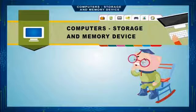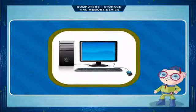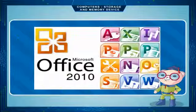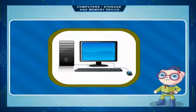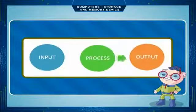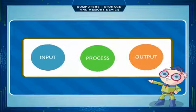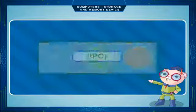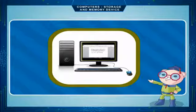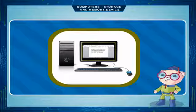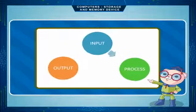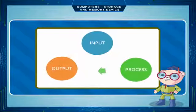A computer is an electronic device that processes raw data with the help of a program and produces meaningful information. These functions are performed in a cycle called the input-process-output cycle, or IPO cycle. We input data and instructions into the computer, it processes them according to our instructions and produces meaningful output. This output can again be input for further processing, making it a cycle.